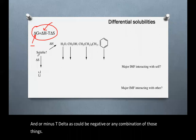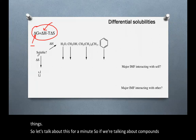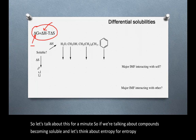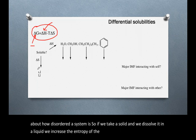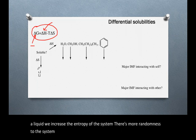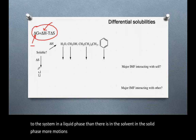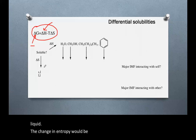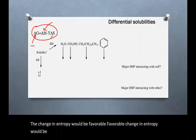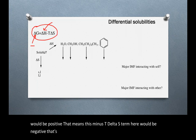Let's think about entropy when we're talking about compounds becoming soluble. Entropy is about how disordered a system is. If we take a solid and dissolve it in a liquid, we increase the entropy of the system — there's more randomness in the liquid phase, more motions, more microstates. A favorable change in entropy would be positive, which means the minus T delta S term would be negative. That's good if we're looking for a negative delta G.